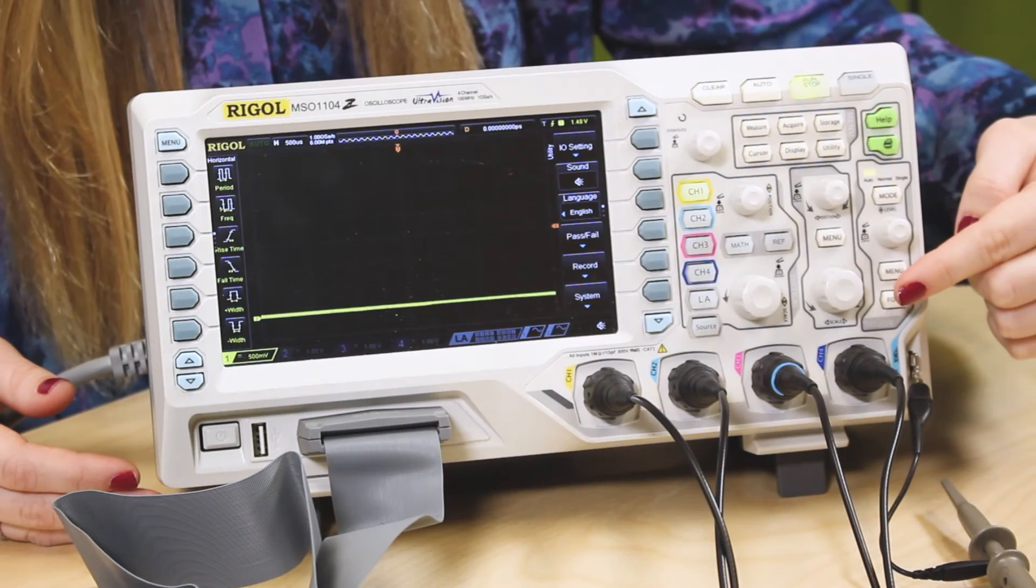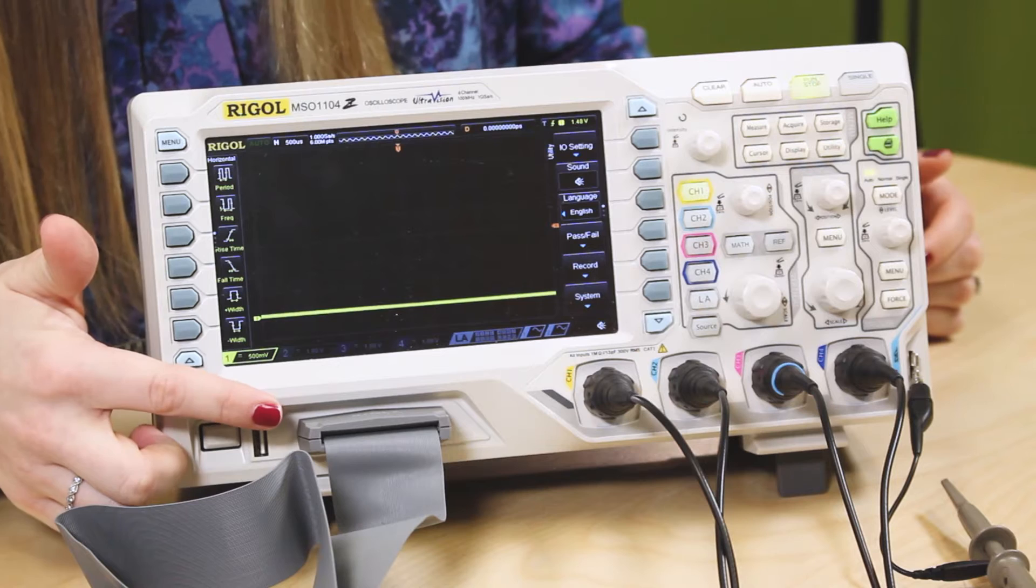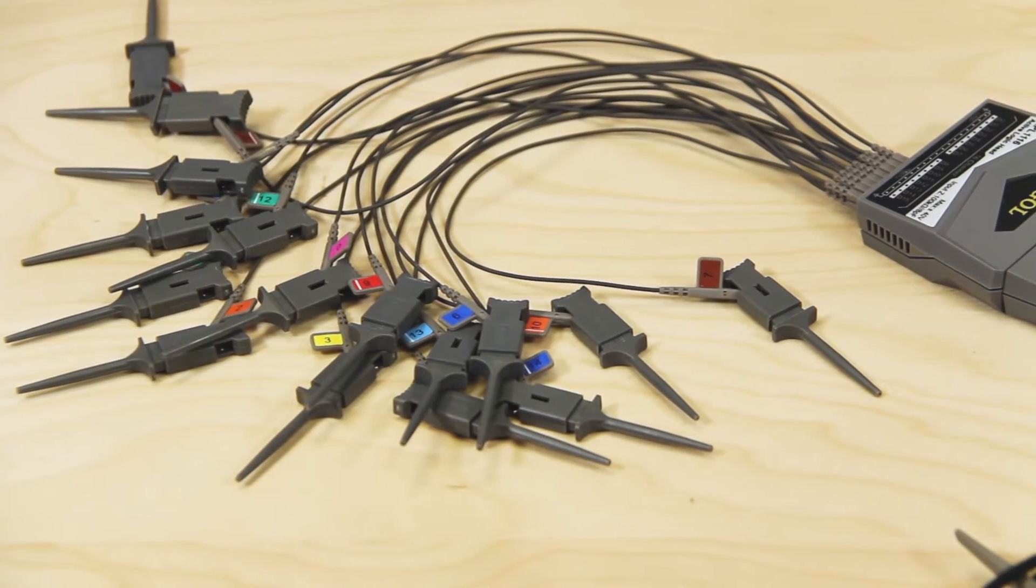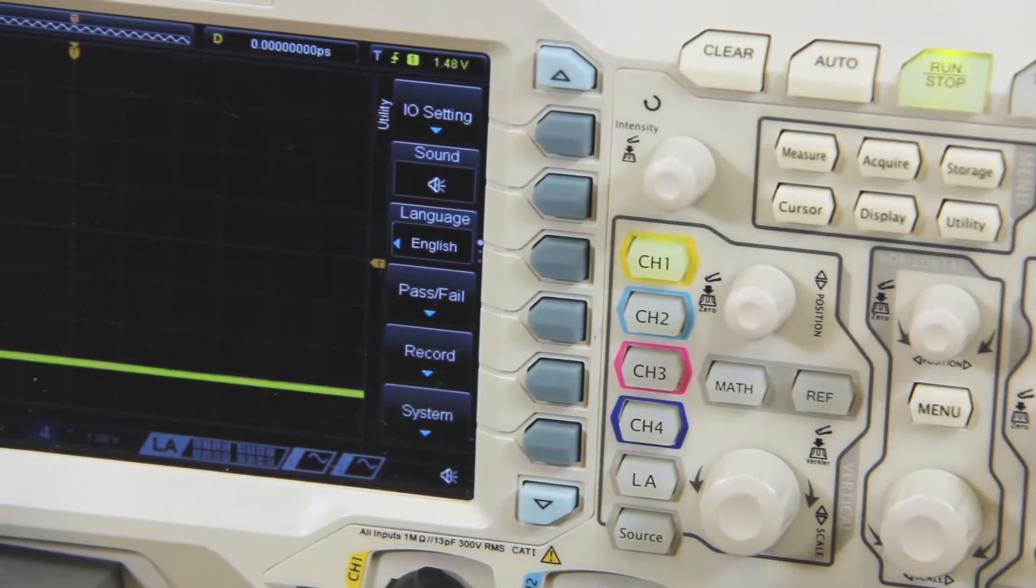This is a 100 MHz scope that has 4 analog channels and 16 digital channels. It comes with 4 passive analog probes and an active logic probe. It also carries a 25 MHz 2-channel waveform generator.